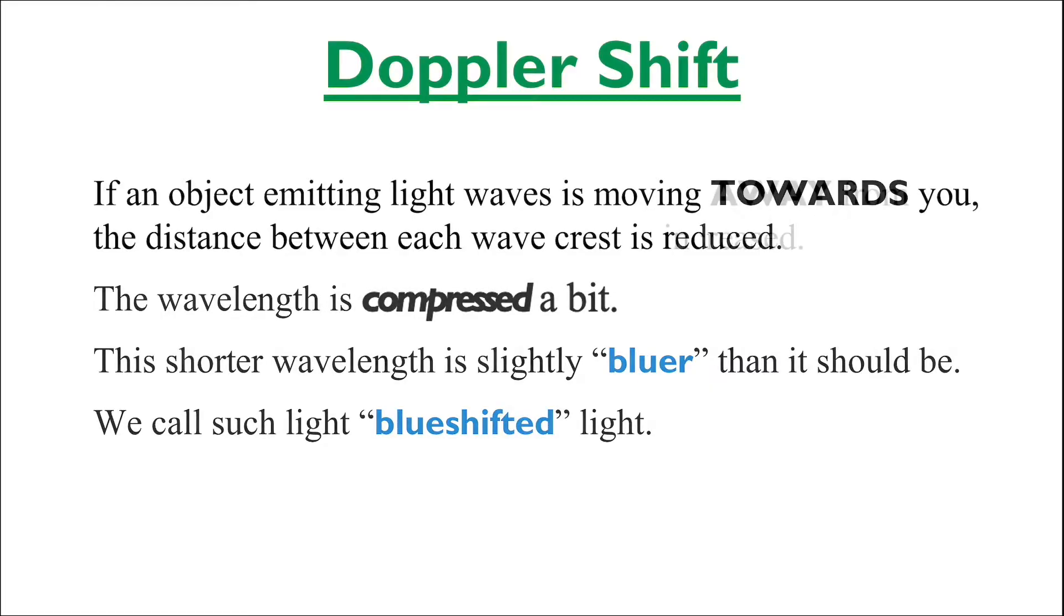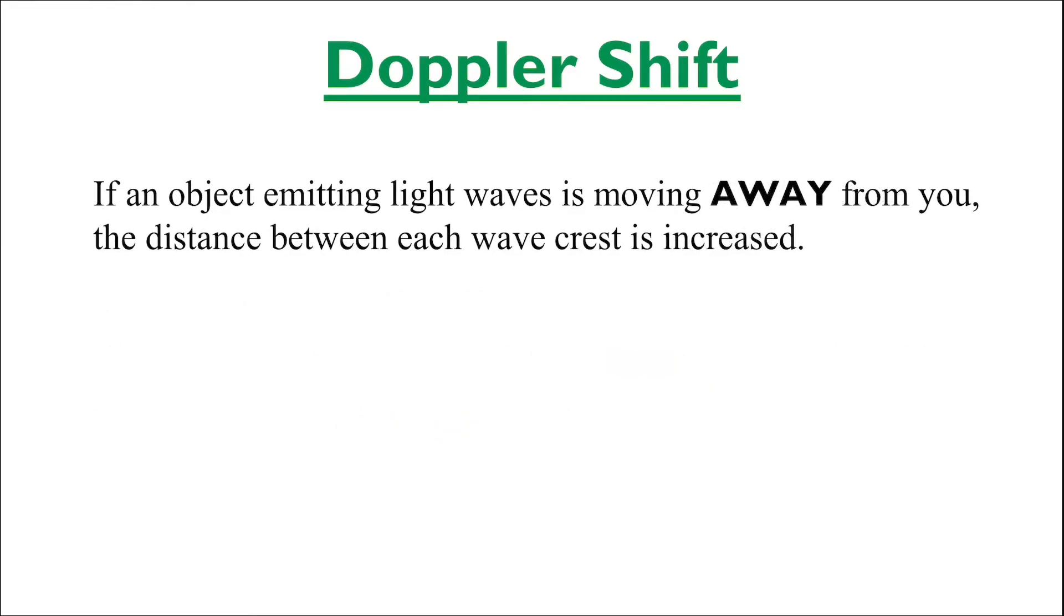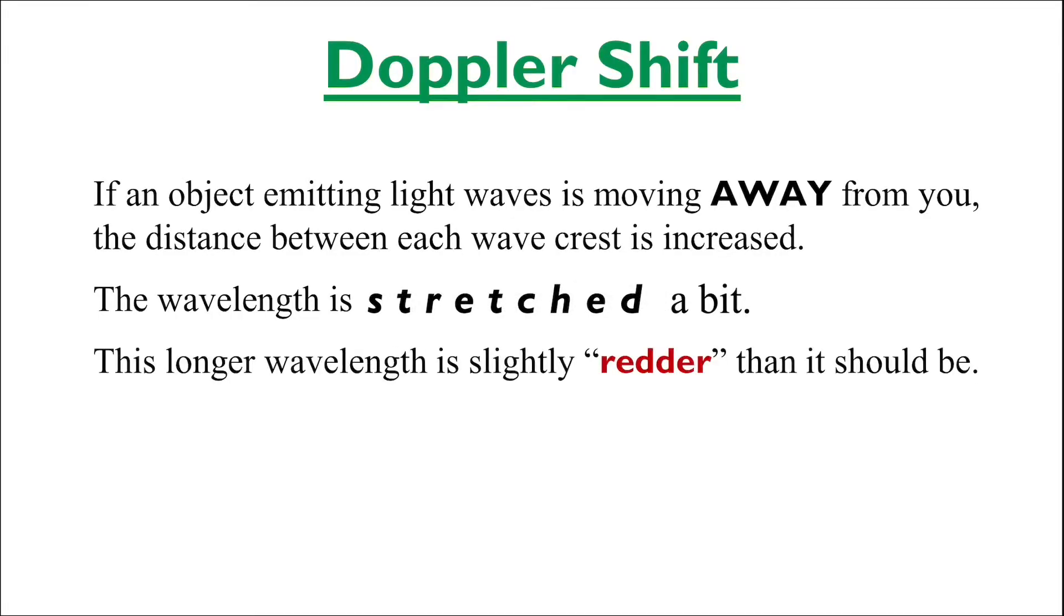But on the other hand, if an object emitting light waves is moving away from you, the distance between each wave crest is increased. So, the result here is a wavelength that is stretched a bit. This longer wavelength is slightly redder than it should be, so we call it red-shifted light.